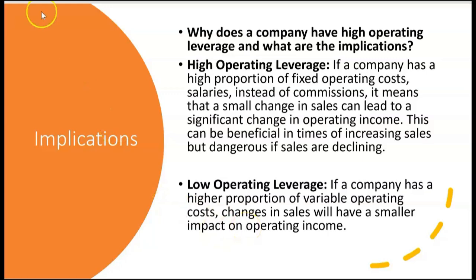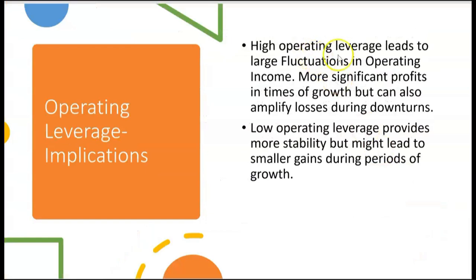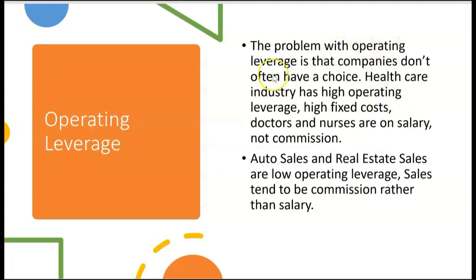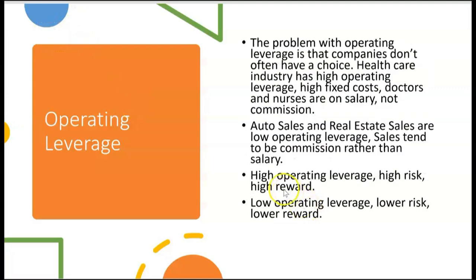With low operating leverage, a company has a higher proportion of variable costs, so changes in sales have a smaller impact on operating income. High operating leverage leads to large fluctuations in operating income — more significant profits in times of growth, but it can amplify losses during downturns. Low operating leverage provides more stability but smaller gains during growth. Companies don't always have a choice: healthcare has high operating leverage due to salaried staff, while auto and real estate sales have low operating leverage because compensation tends to be commission-based.